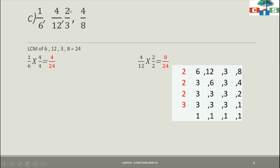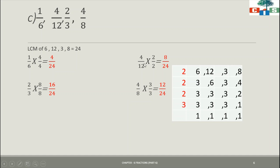Third fraction: 2/3. I multiply 3 by 8 to get 24, so I multiply numerator also by 8 — 2 × 8 = 16 and 3 × 8 = 24, giving 16/24. Last fraction: 4/8. I multiply 8 by 3 to get 24, so I multiply the numerator also by 3 — 4 × 3 = 12 and 8 × 3 = 24, giving 12/24. So the set of fractions has been converted into like fractions — everywhere we have the same denominator, 24.